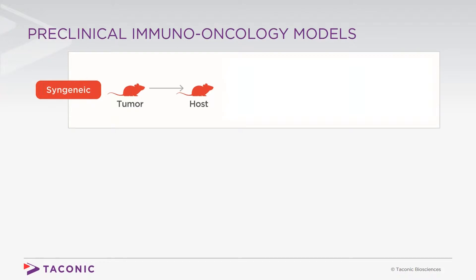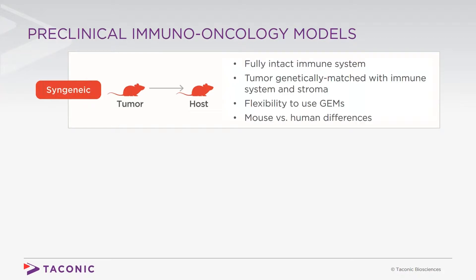Syngeneic models have several advantages. Firstly, the host has a fully intact endogenous immune system, making it possible to study numerous mechanisms of tumor-immune interaction. Secondly, the tumor is genetically matched not only with the immune system, but also with the tumor stroma. Finally, genetically engineered mouse models on defined inbred backgrounds make it possible to study a wide range of mechanistic and immunological pathways for discovery and validation of novel therapeutic targets.